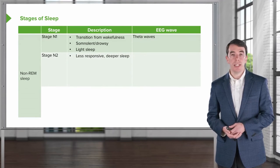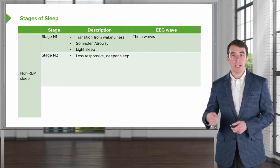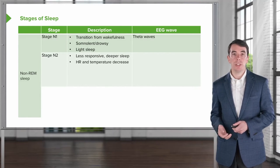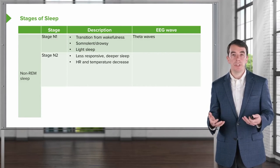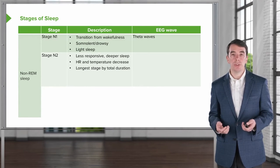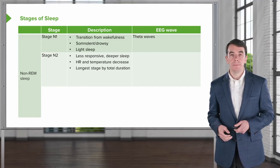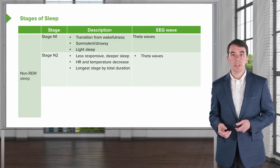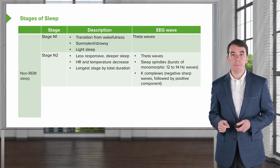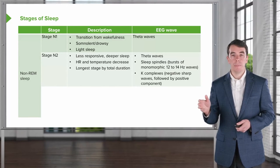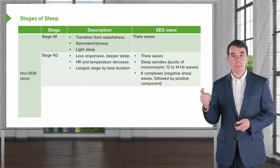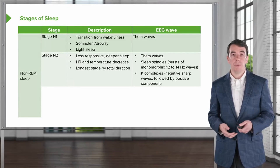Stage two sleep is characterized by patients becoming less responsive. And the brain is going deeper and deeper into sleep. The heart rate goes down. Temperature begins to decrease. And the body prepares for deep sleep as well as REM sleep. This is the longest stage in terms of the total duration of sleep calculated over the course of the night. And on EEG, we see theta waves, sleep spindles, which are bursts of high frequency, low amplitude activity, and K-complexes, which are large discharges of waves. The sleep spindles help to put the brain to sleep. And those K-complexes help to maintain arousal in case the body needs to wake up for any reason.